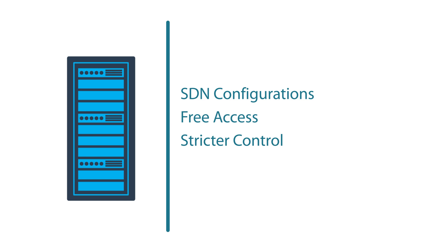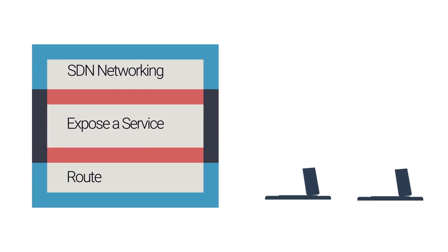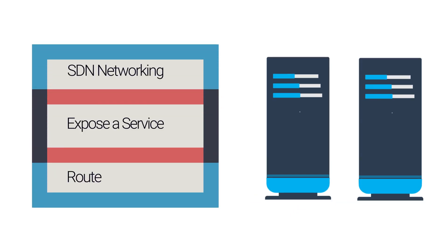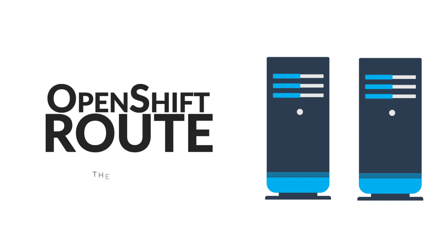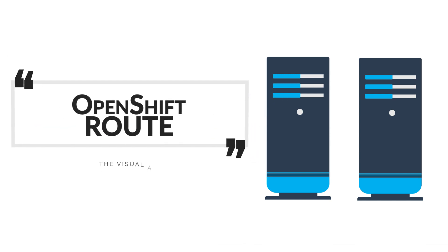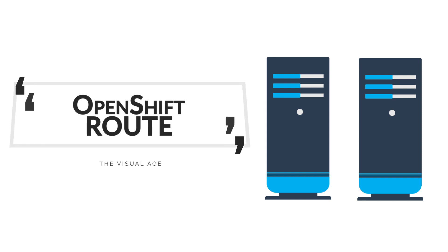We have a service that is running in front of the pods. Then to enable external access into the cluster, we need to expose a service that the pod or groups of pods represent, and this is done with an OpenShift route.